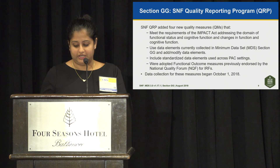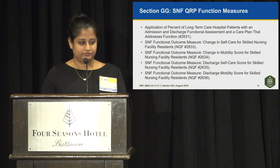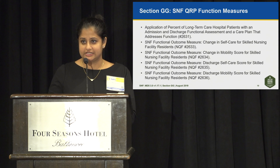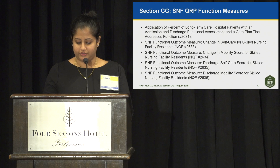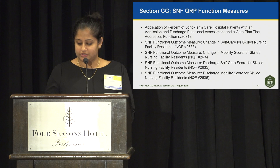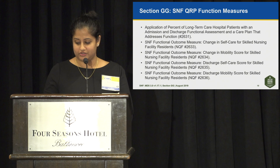Here we have the SNF QRP function measures. The first measure is the existing process measure, and the four following are the new outcome measures: NQF 2633, the change in self-care for skilled nursing facility residents; 2634, the change in mobility score for SNF residents; 2635, the discharge self-care score for SNF residents; and 2636, the discharge mobility score for SNF residents.